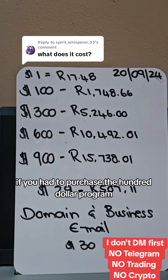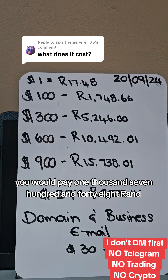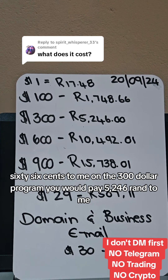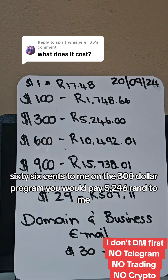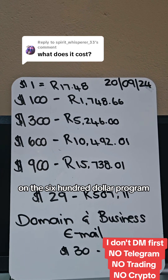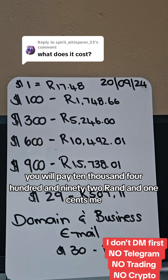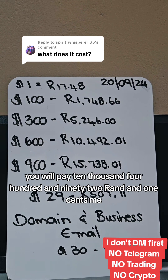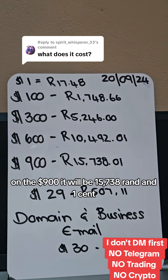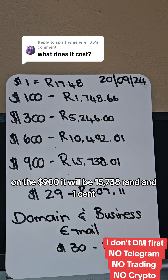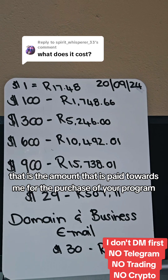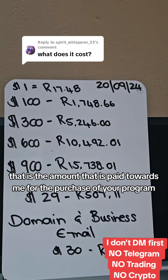If you had to purchase the $100 program, you would pay 1,748 Rand 66 cents. On the $300 program, you would pay 5,246 Rand. On the $600 program, you would pay 10,492 Rand and one cent. On the $900, it will be 15,738 Rand and one cent. That is the amount paid towards me for the purchase of your program.